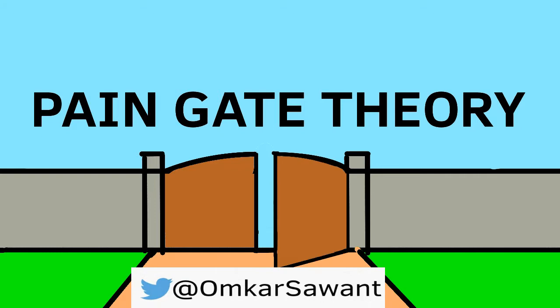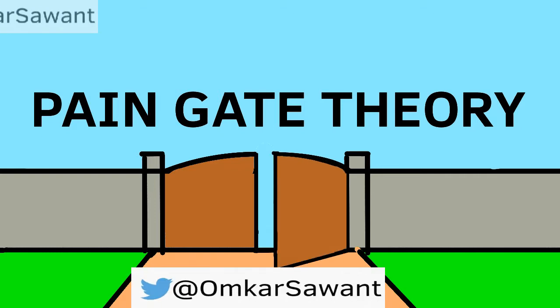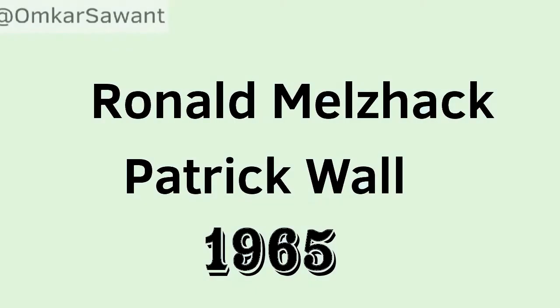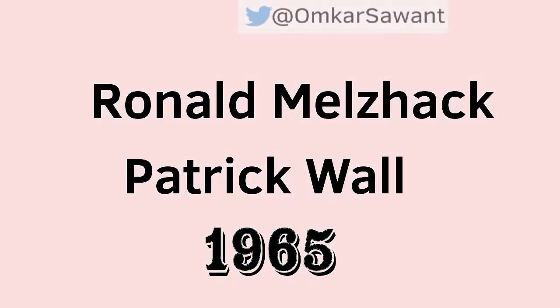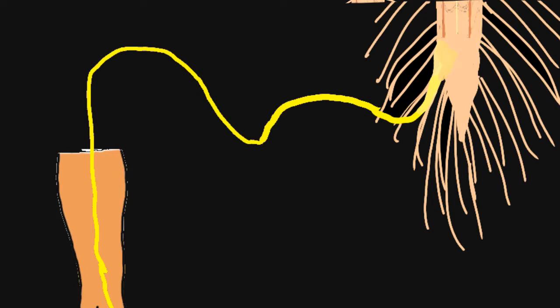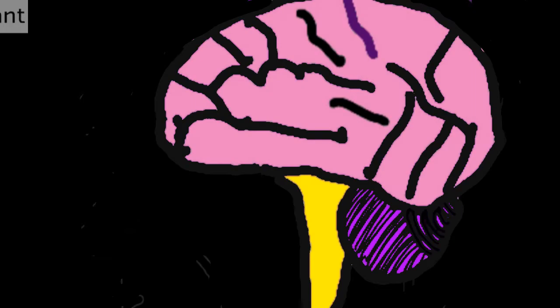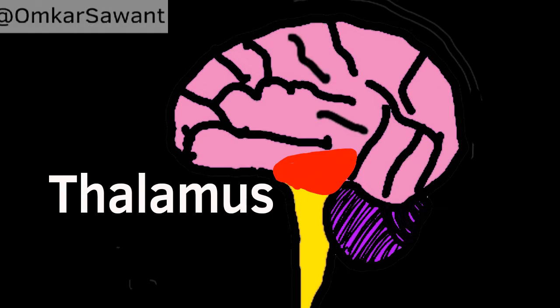Gate Control Theory was a revolutionary theory proposed by Melzack and Wall in 1965. As described in the previous post, pain travels from the receptors to the pain centers in the brain — mainly in the cortex and thalamus — via the spinal cord.